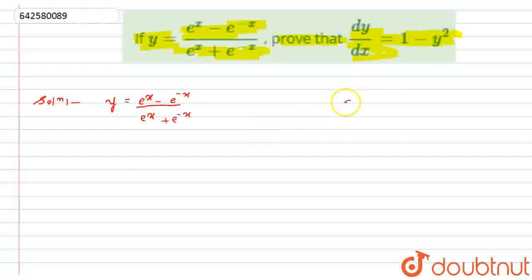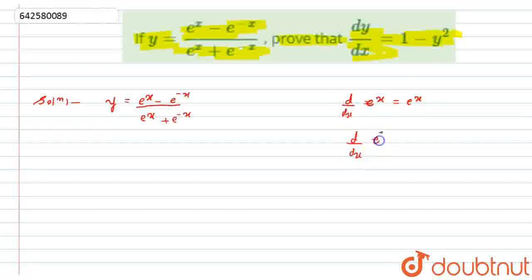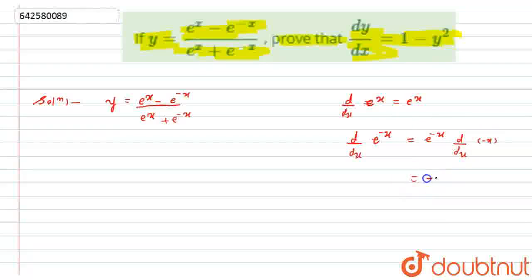So for that, first of all, I want to remind you some formulas: d by dx of e raised to x is equal to e raised to x. And similarly, d by dx of e raised to minus x will be nothing but e raised to minus x into d by dx of minus x, so that will become minus of e raised to minus x.